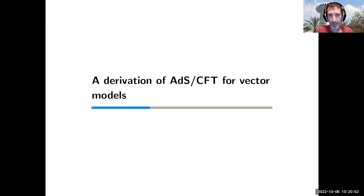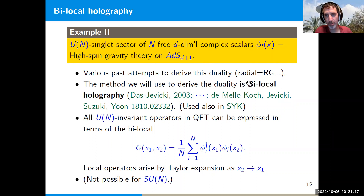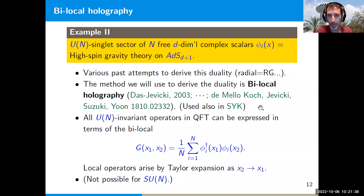Let's get to the derivation. This duality was suggested 20 years ago and there have been various attempts to derive it — many identify the radial direction of AdS with the renormalization group scale of the field theory — but I think none of these attempts is completely satisfactory. The method I'll describe here is different: what's sometimes known as bi-local holography, originally suggested for these theories by Joanna Jevicki almost 20 years ago, following some work of de Mello Koch and Jevicki from about five years ago. This type of holography is also similar to what people do in the context of the SYK model.